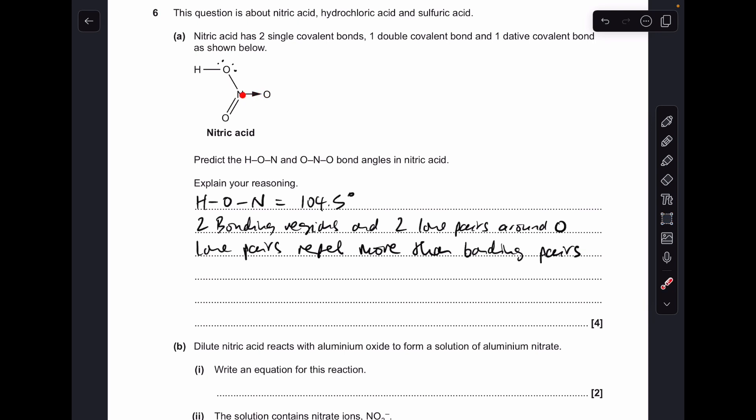And for the ONO bond angle, we've just got three bonding regions around this central nitrogen. Double bonds count as one region, so equal repulsion, 120 degrees.